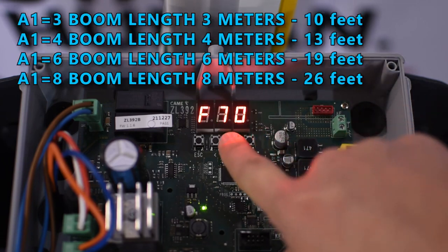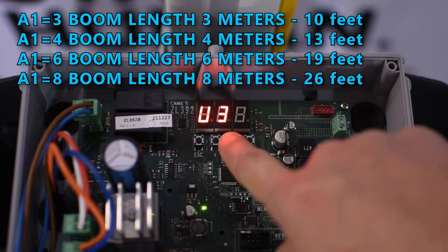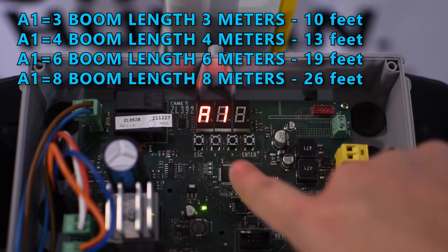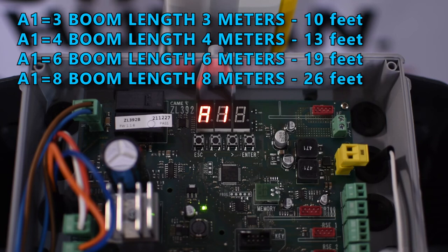The next step is to go to A1 and set the length of the boom. So measure the arm and set it to that number of meters.